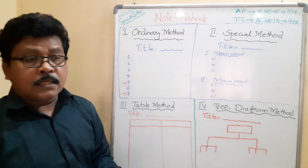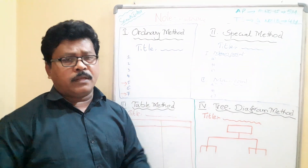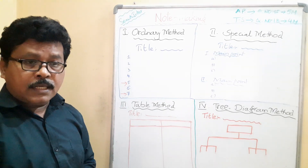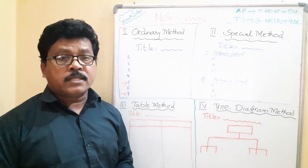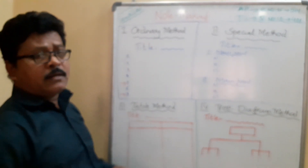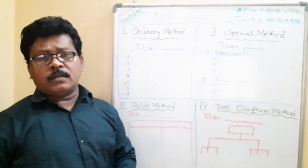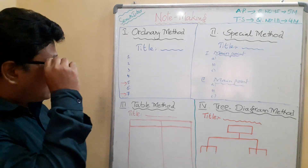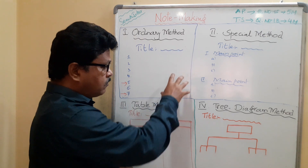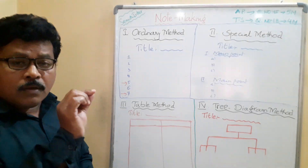Write brief bullet points — don't copy the passage; just change the sentences and keep them very brief, like shortcut messages. Under the title you can write five, six, or seven points. If it is a small passage write five points; if it is a big passage write seven. You can take roughly two points from the first paragraph, two from the middle, and two from the last.